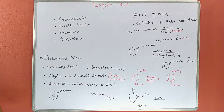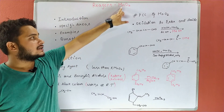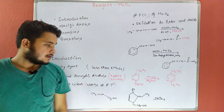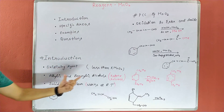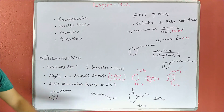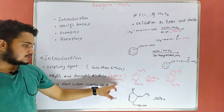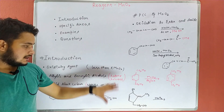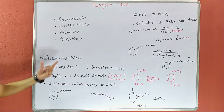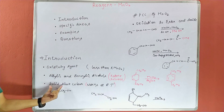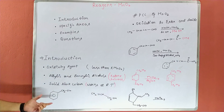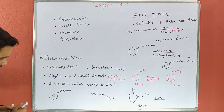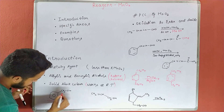MnO2 is an oxidizing agent. The oxidation state of Mn is +4. It is used for the oxidation of allylic and benzylic alcohols at room temperature, and ketone is used as a solvent in this reaction. Physically, it is a solid, black colored compound and works at room temperature.